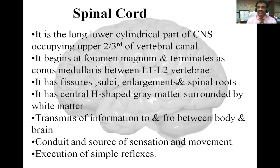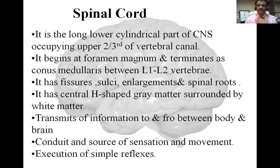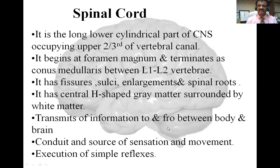The spinal cord has fissures — anterior median fissure and posterior median fissure — as well as sulci, enlargements, and spinal roots forming 31 pairs of spinal nerves. There are enlargements for the brachial plexus and lumbosacral plexus. The spinal cord has H-shaped gray matter in the center surrounded by white matter. Gray matter is made up of cell bodies of neurons; white matter is made up of axons of neurons. The spinal cord transmits sensory and motor information to and from the body and brain, and is responsible for simple reflexes.